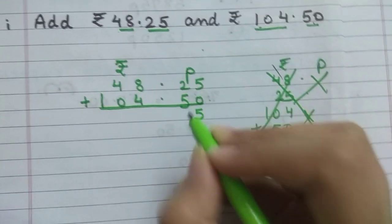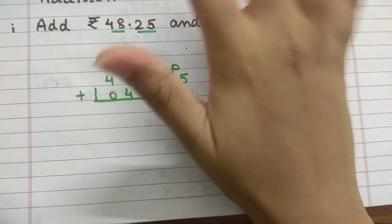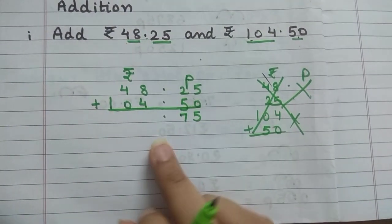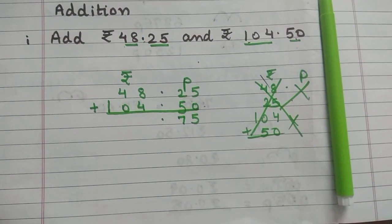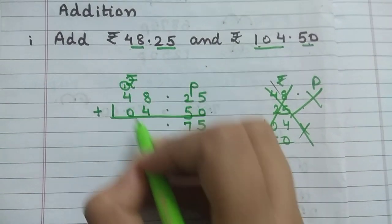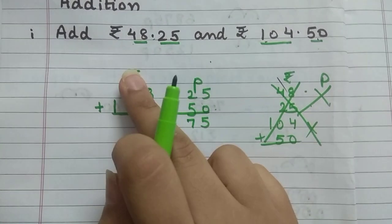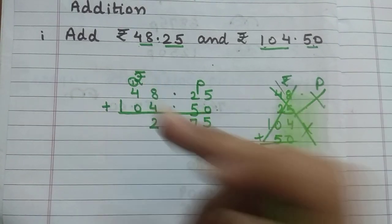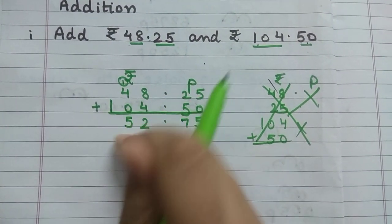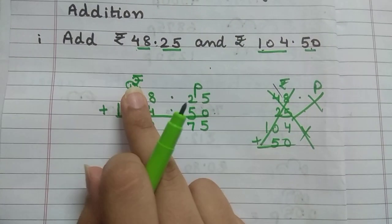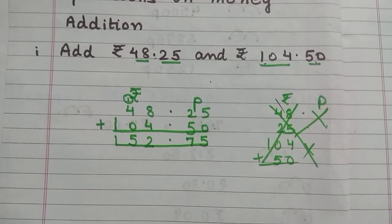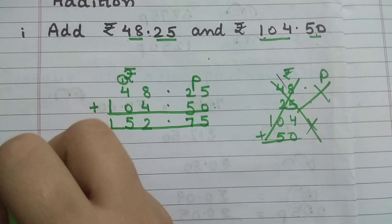5 plus 0 is 5. 2 plus 5. 2 in the mind, 5 fingers open, count after 2: 3, 4, 5, 6, 7. So 1 will go up and 2 will stay down. 1 and 4, 4 and 1 will be 5. 5 plus 0 is 5. Nothing and 1 is 1. What will be the answer? 152 rupees and 75 paisa.